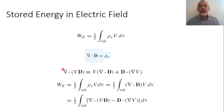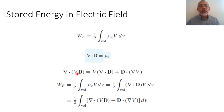Let us consider the divergence of VD, where V is the potential and D is the electric flux density. Treating it like any differential operator, we take the derivative of the first term multiplied by the second, plus the first term multiplied by the derivative of the second. So we can write: ∇·(VD) = V·(∇·D) + D·(∇V).